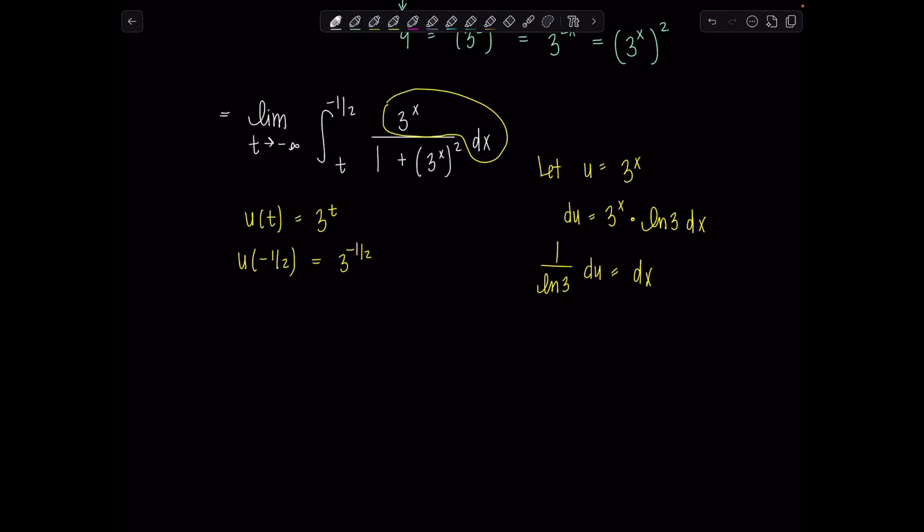It's that for a reason don't worry things will turn out beautifully in a moment. So we've got limit t goes to negative infinity 3 to the t to 3 to the negative one-half. I have 1 over ln of 3 and then all of this is also du now over 1 plus u squared.